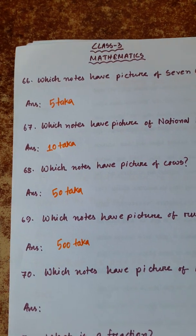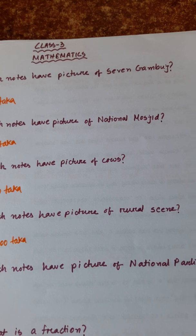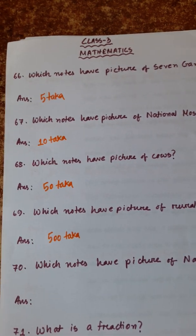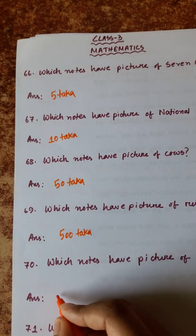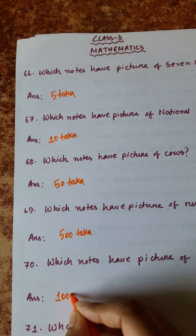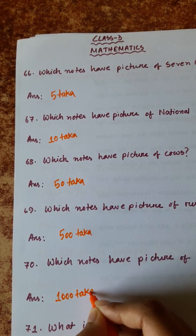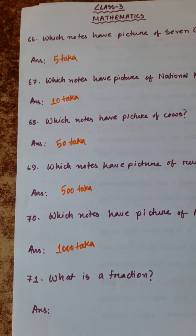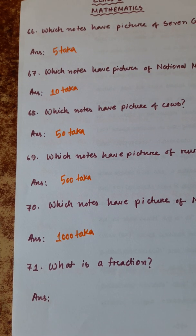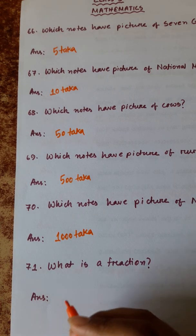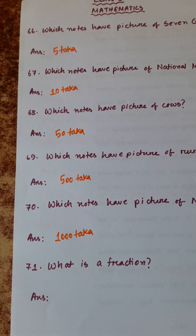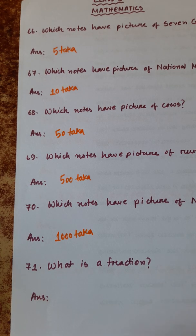Number 69: which notes have the picture of a rural scene? It will be the 500 taka note. Number 70: which notes have the picture of the National Parliament? The 1000 taka note. Number 71: what is a fraction? A fraction represents part of a whole. When something is broken up into a number of parts, the fraction shows how many of those parts you have.